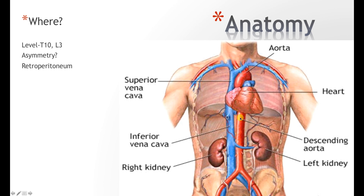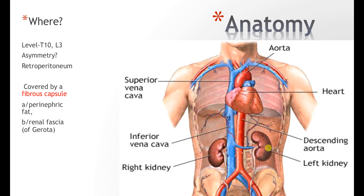The left kidney is just beneath the diaphragm, ranging from approximately the 10th thoracic vertebra down to the 3rd lumbar vertebra, while the right kidney is a little further down. The kidney itself is enclosed in a fibrous capsule. Outside of this capsule is the perinephric fat — peri meaning around. Outside of that is the renal fascia, also called the renal fascia of Gerota. And outside of that is the paranephric fat, followed by the peritoneum itself.